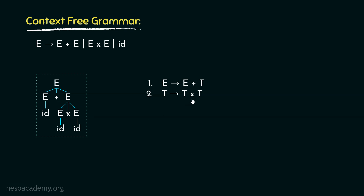Now, the multiplication operator by definition is also left associative. So, clearly, we will have to make sure that this second production rule is a left recursive one. We can do that by rephrasing this rule as t can be rewritten as t into f. Now this is a left recursive rule. Now observe, e can be rewritten as either e plus e or e into e or id. So, our modified production rules should also facilitate that.